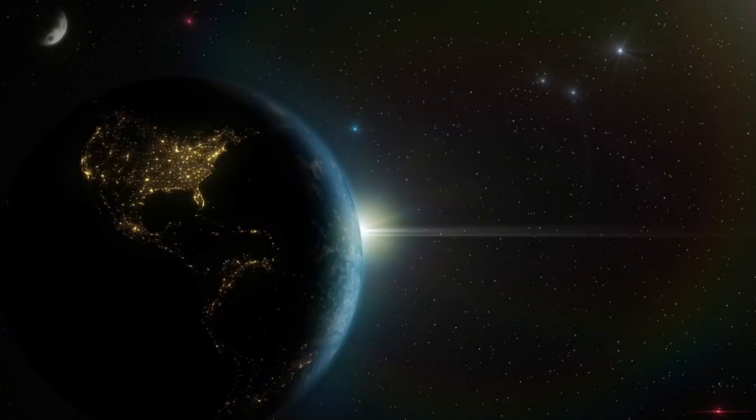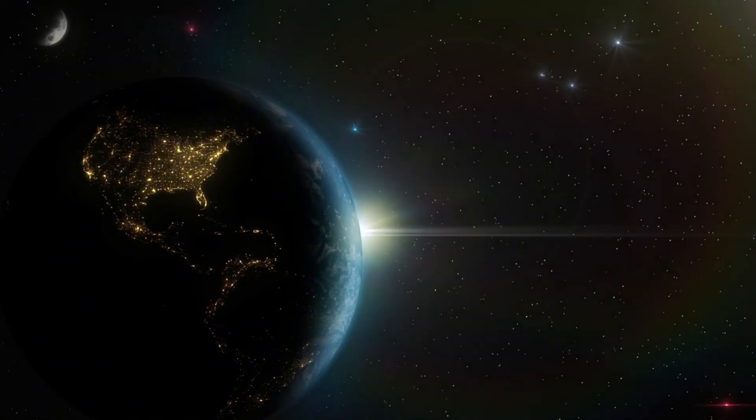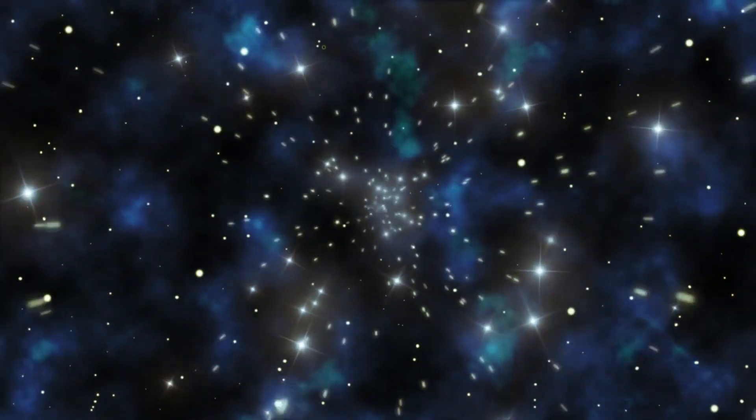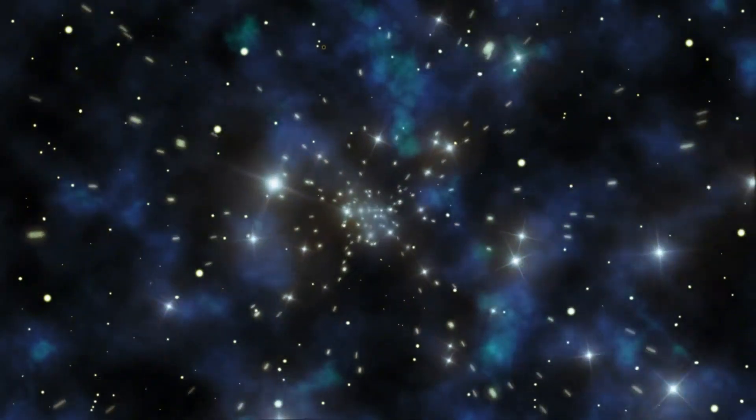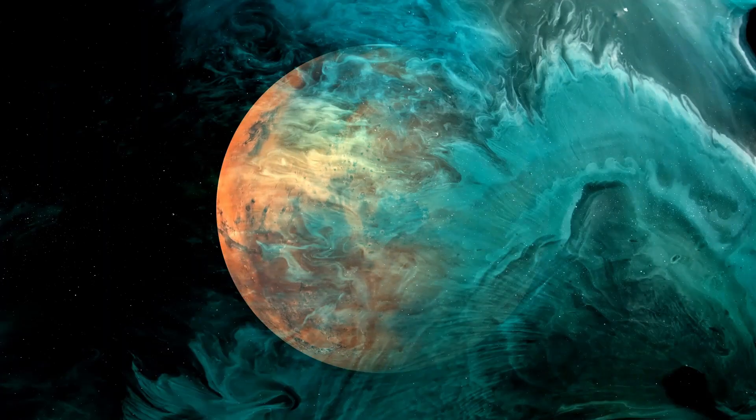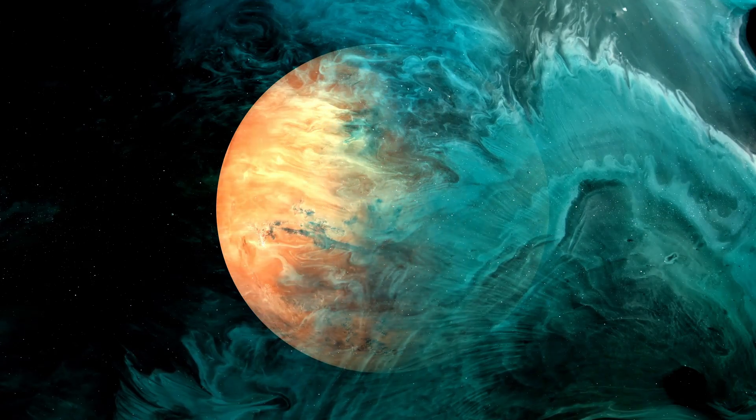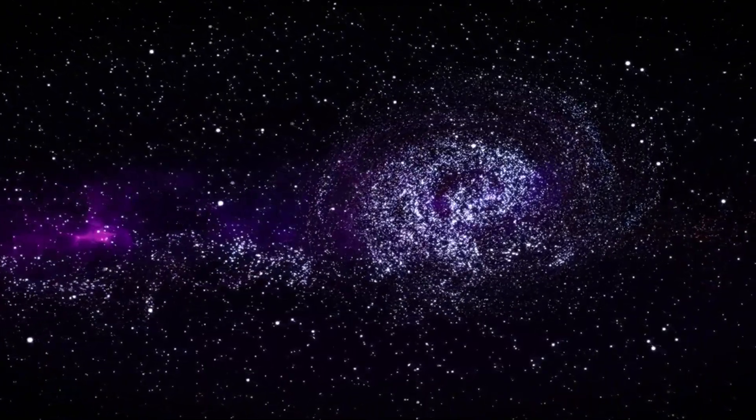Unlike Hubble, which primarily captures visible light, the JWST was designed to observe in the infrared spectrum, allowing it to peer much further into the universe. This capability is critical for studying distant galaxies whose light has been stretched into the infrared due to the expansion of the universe, rendering them invisible to telescopes like Hubble. With its enormous, cold, star-like mirror, the JWST became the premier instrument for uncovering the secrets of cosmic dawn.